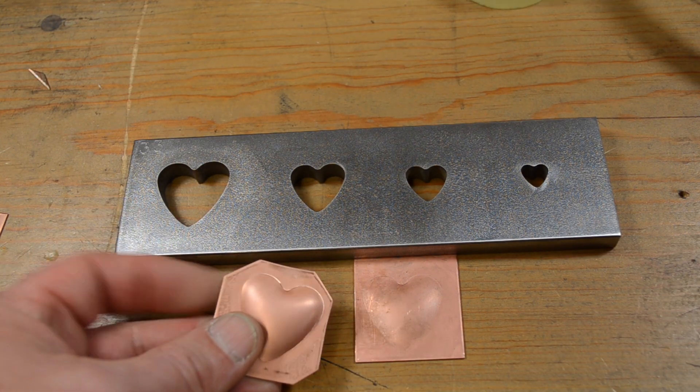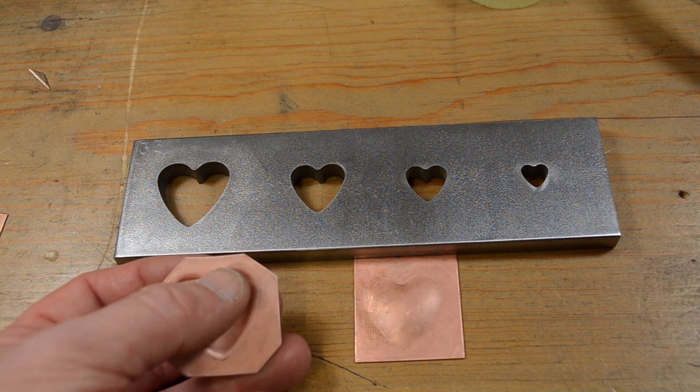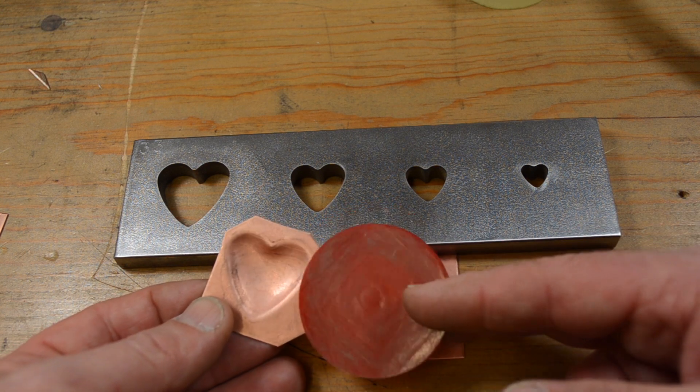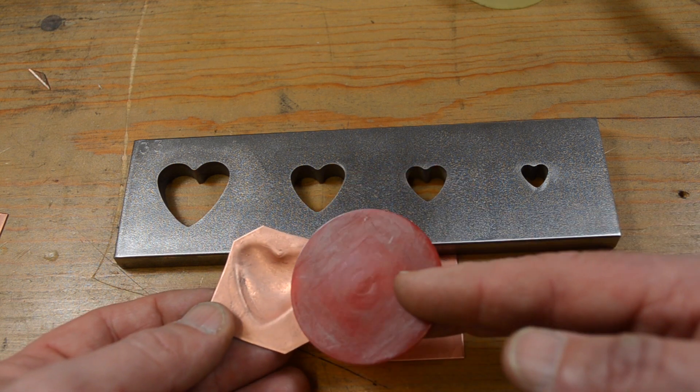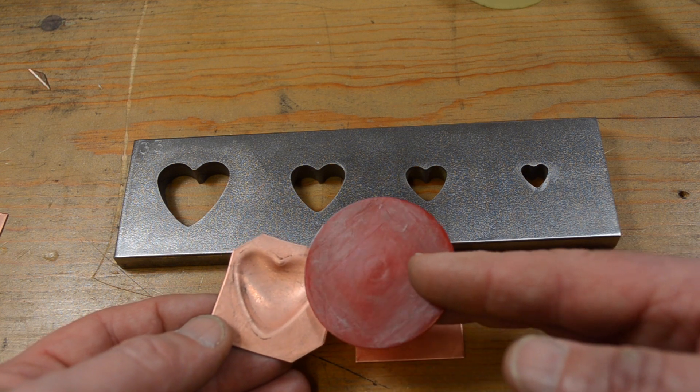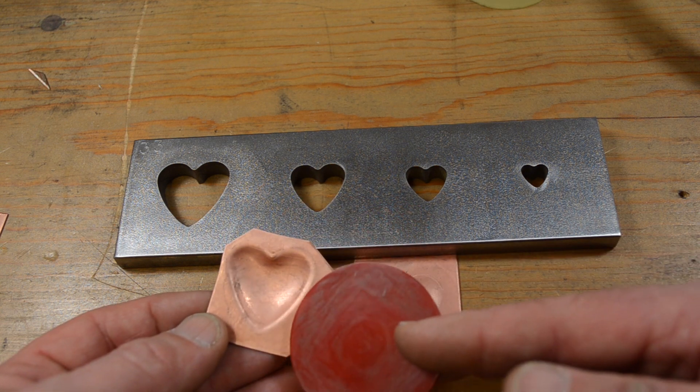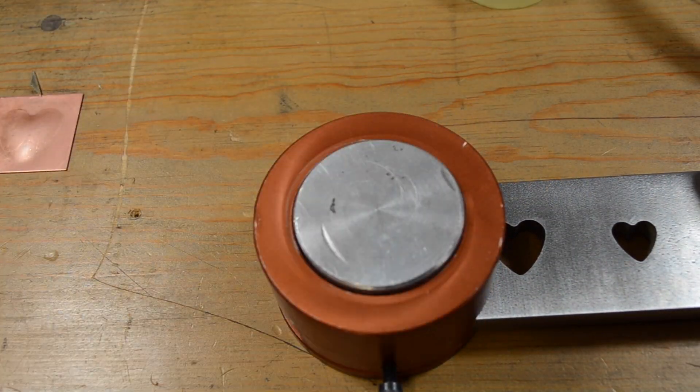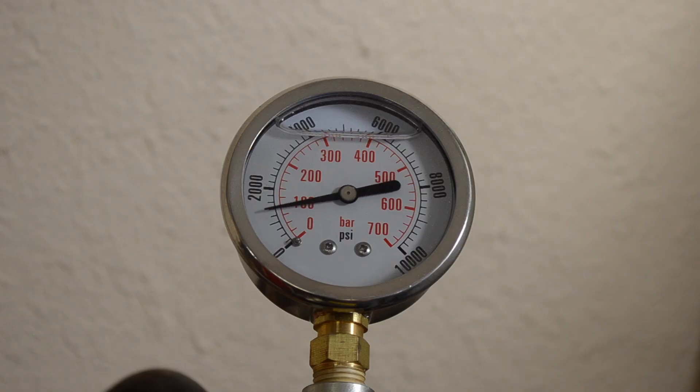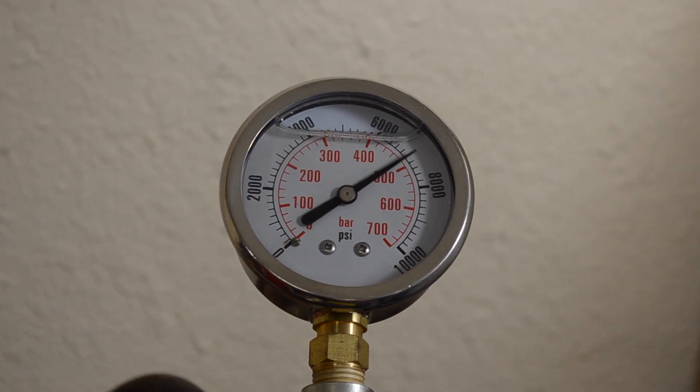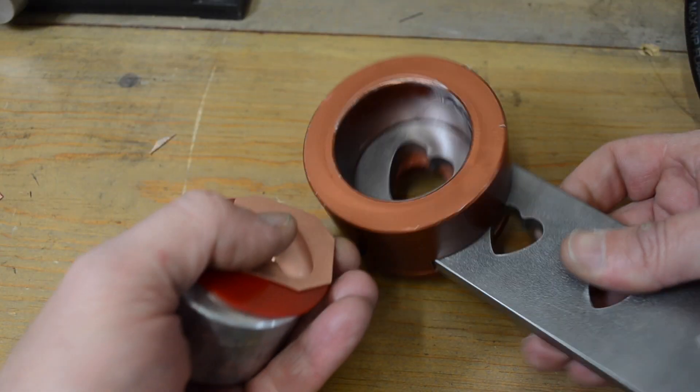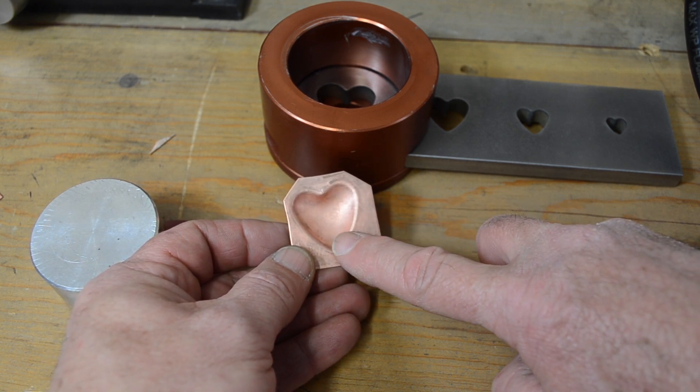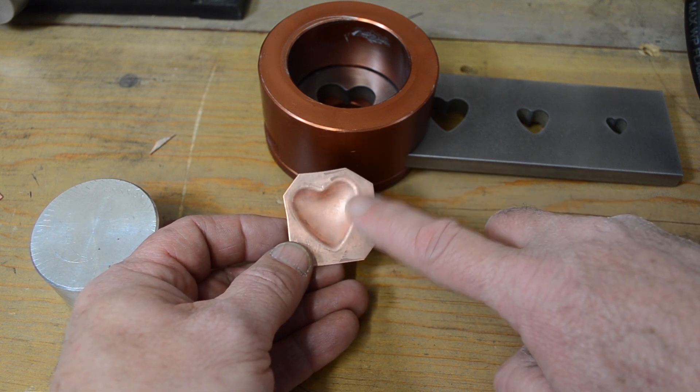The next thing I want to do with this is I want to define this line just a little bit more and I'm going to do that by using 95 durometer urethane going back into the container and giving it a pressing. All it's going to do is just sharpen this line a little bit better and it's going to help a little bit more in finishing. So you can see that this is a lot more defined than it was prior and that's going to make it a lot easier whenever we're cutting it out and finishing it.